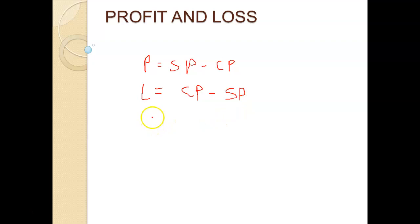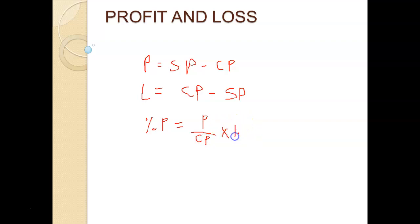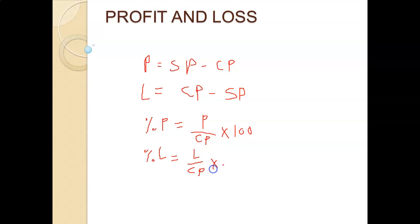Next, percentage of profit. Percentage of profit is nothing but profit (P) divided by cost price (CP) into 100. And percentage of loss is nothing but loss divided by CP into 100. Both percentage of profit and percentage of loss depend upon CP.